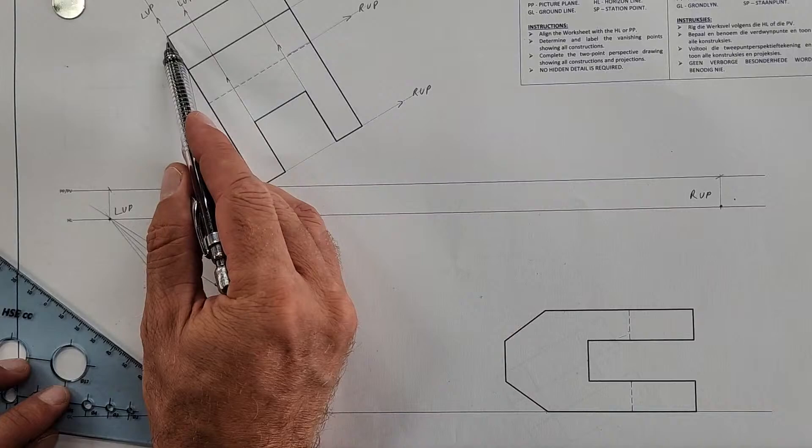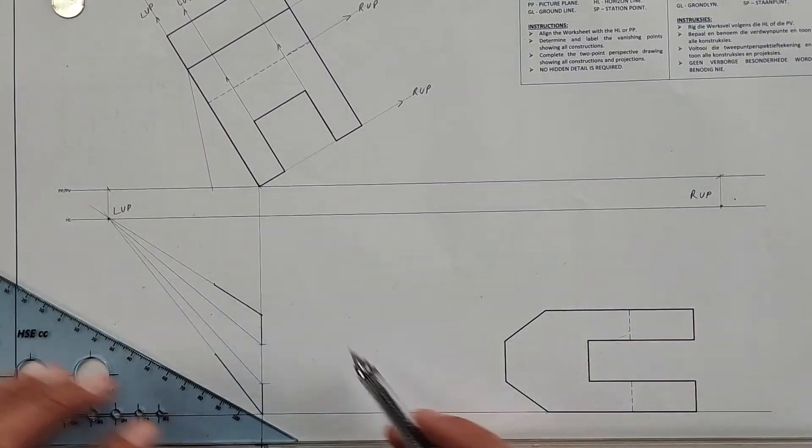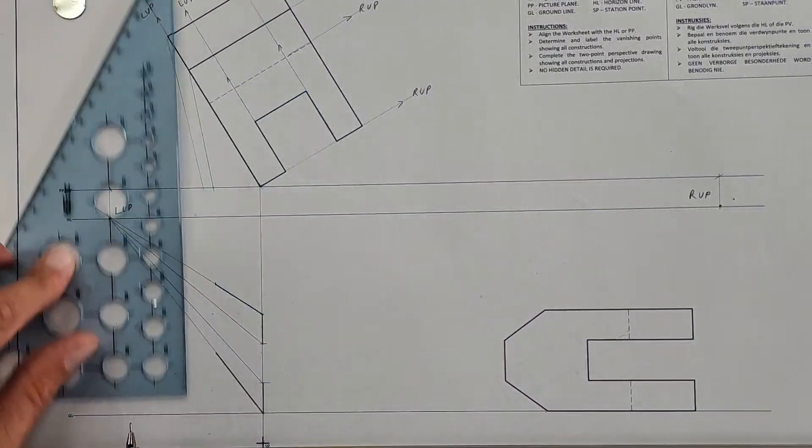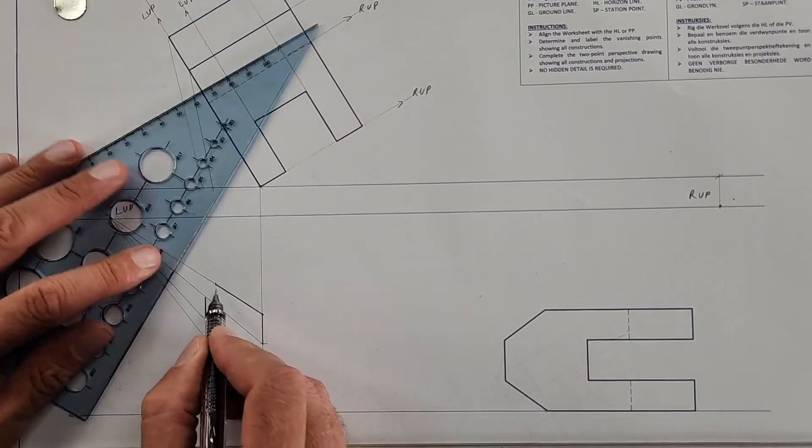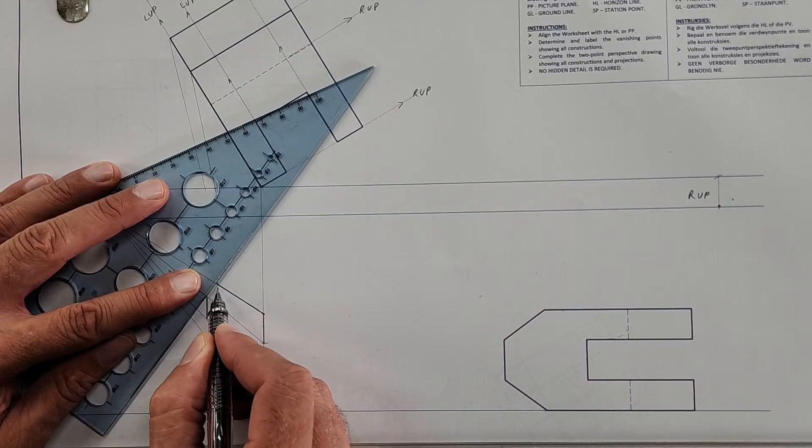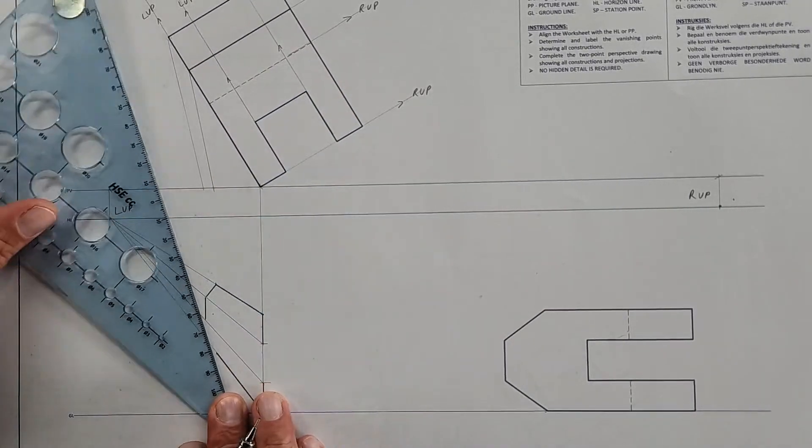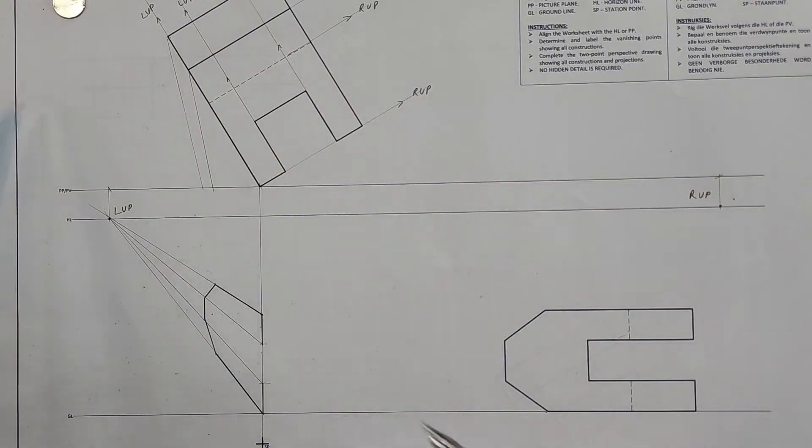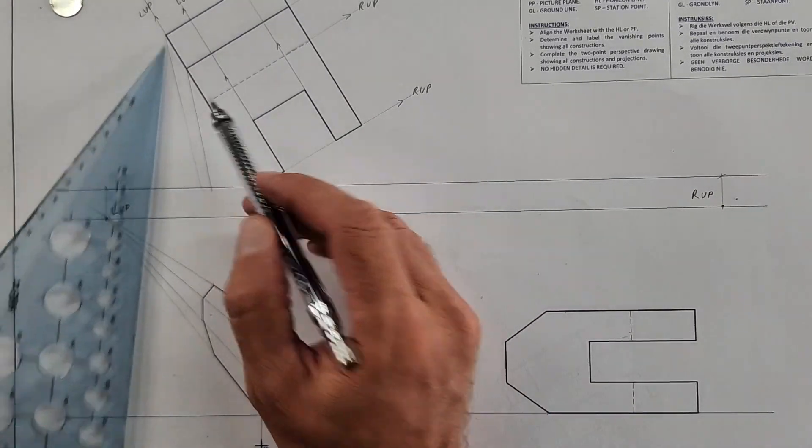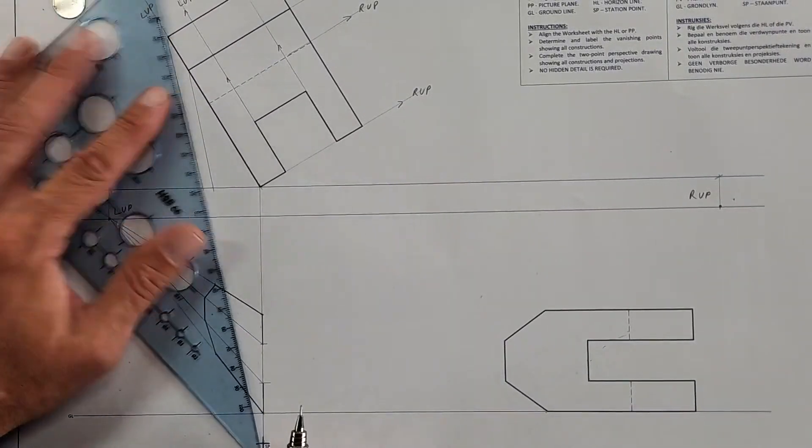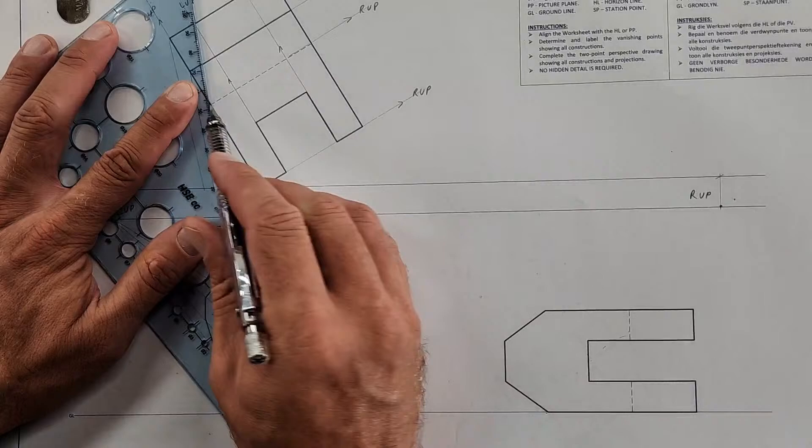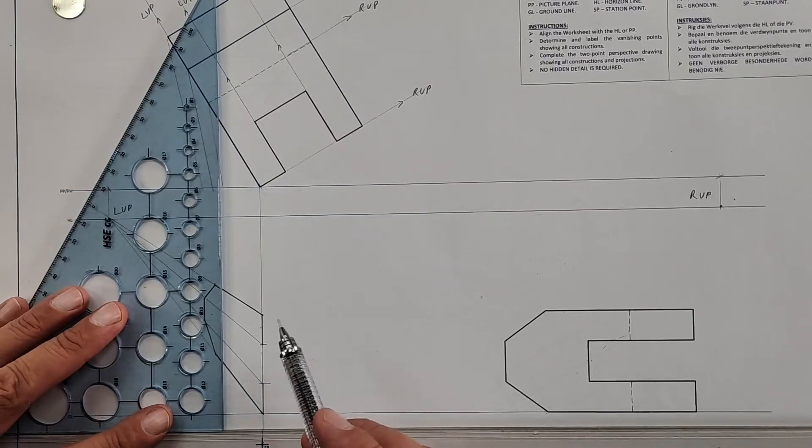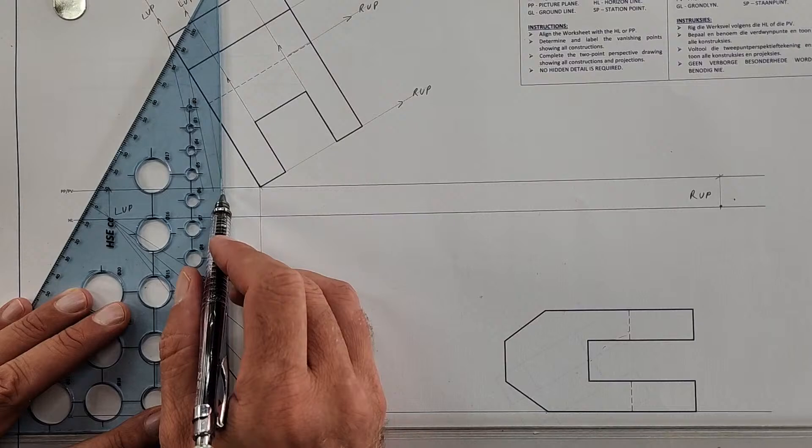This corner, if you look here, it's at the same height. Aim it to the SP, it's this corner, and so here I can join it. This end here, which is this corner, we're going to aim that to the SP.